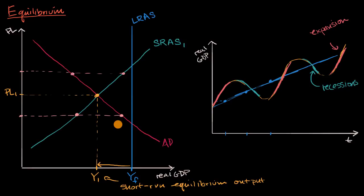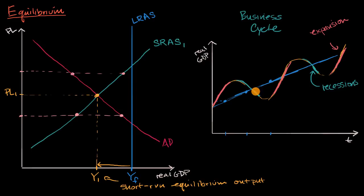Going back to our aggregate demand and aggregate supply diagram, our equilibrium point Y sub one — what point could that correspond to on the business cycle graph? We're at a point where our short run equilibrium output is below our full employment output — our sustainable full potential output. So this would correspond to some point where real GDP is sitting below the full employment curve. Y sub one could be this point, or that point, or that point — and this right over here would be Y sub F for that point in time.